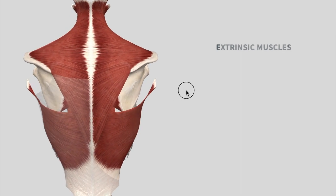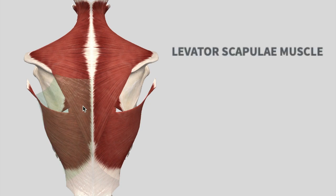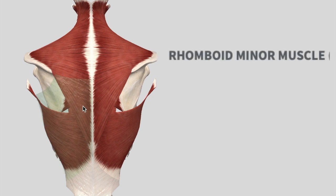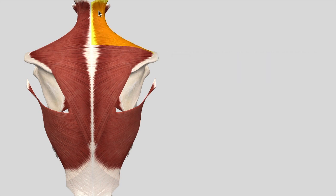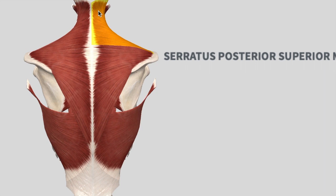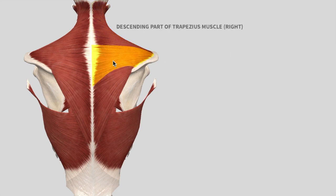We can start with the extrinsic muscles. These include the trapezius muscle, then we have the levator scapulae muscle which elevates the scapula, moving on into the rhomboid minor and the rhomboid major muscles, and finally we have the serratus posterior superior and there's an inferior as well.